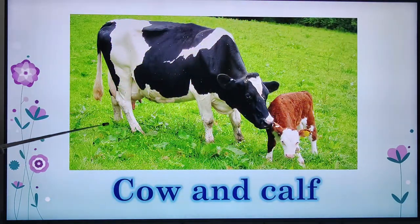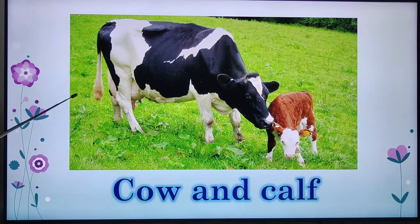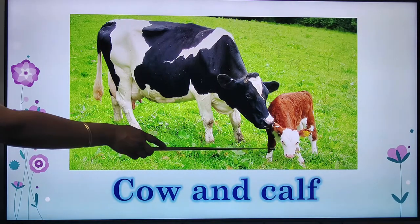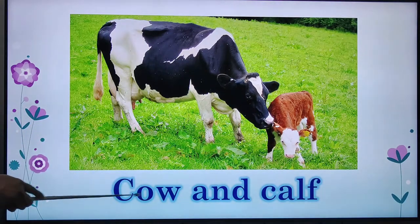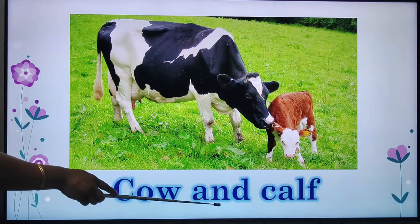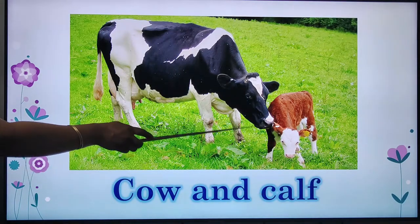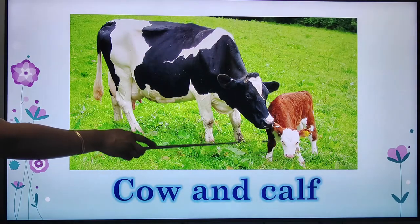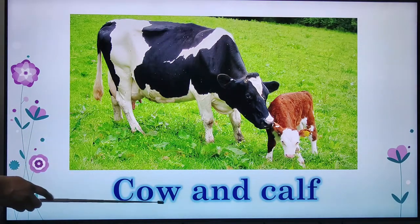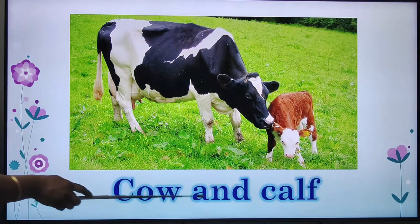This is cow. Cow gives us milk. See the little one here standing with the mother. C-O-W, cow. And C-A-L-F, calf. The young one of cow is called calf. Cow and calf.